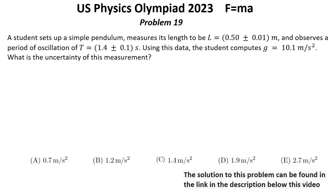Problem number 19. A student sets up a simple pendulum, measures its length to be L equals (0.50 ± 0.01) meters, and observes a period of oscillation of T equals (1.4 ± 0.1) seconds.